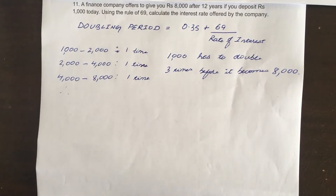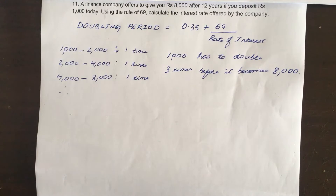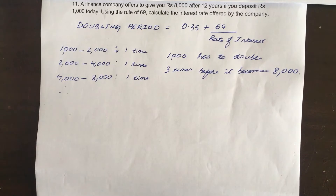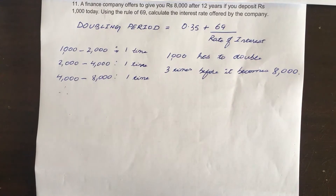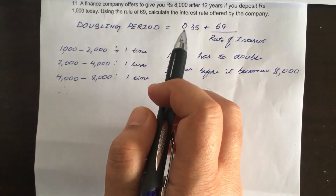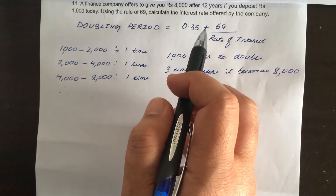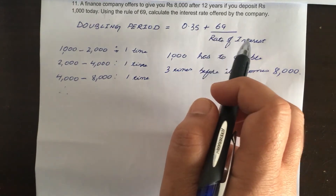Here's another problem where we use one of those rules of thumb. In this case we are going to use the rule of 69. Just like the rule of 72, the rule of 69 is also a rule of thumb — a rough calculation to find out the doubling period, that is, how long it will take for an amount or a deposit to double. According to the rule of 69, doubling period is equal to 0.35 plus 69 divided by the rate of interest.